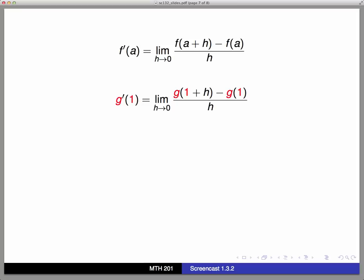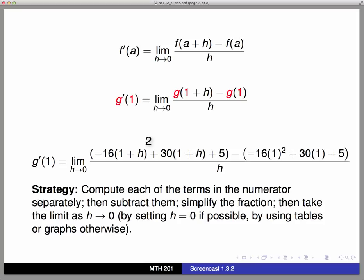Okay, so now I have a skeleton for a formula for g'(1). And the next thing I might want to do is go through on the right-hand side. I've got two values of g that I'm computing: g(1+h) and g(1). And I just want to go through and actually apply the formula for g to those particular situations. And that's what I've done here.